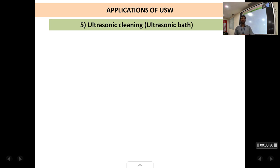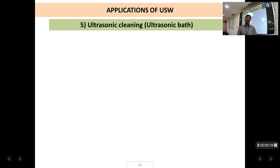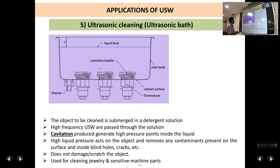Ultrasonic cleaning is a method used to clean sensitive machine parts and jewelry — gold jewelry for example — without damaging or scratching the part. This technique works on the principle of cavitation. Whenever ultrasonic waves are passed through a liquid it causes cavitation: tiny air bubbles are formed and when these bubbles burst, high pressure and temperature is created. This phenomenon is the basic principle of the ultrasonic cleaning technique.